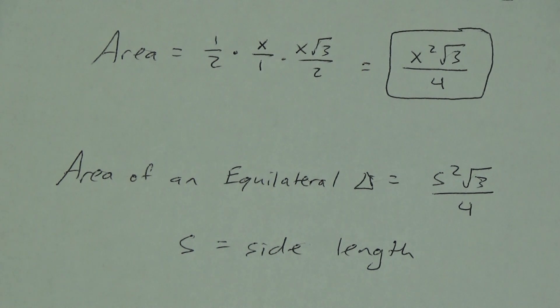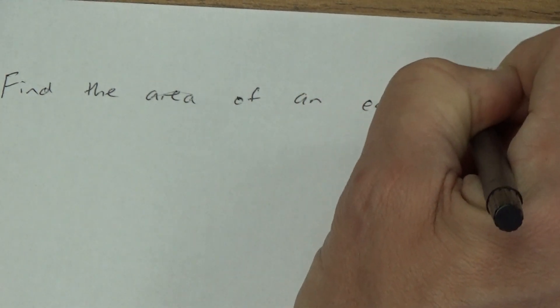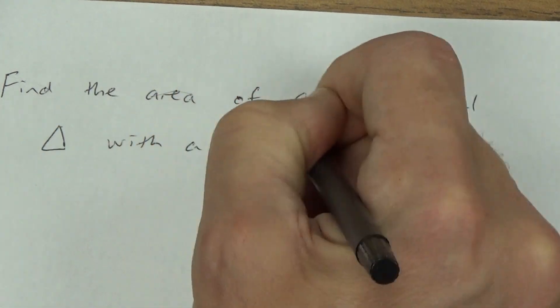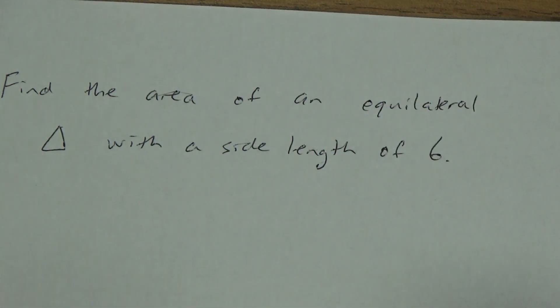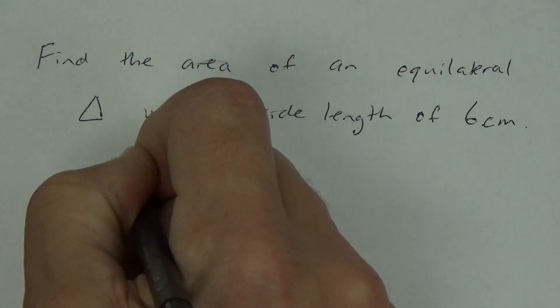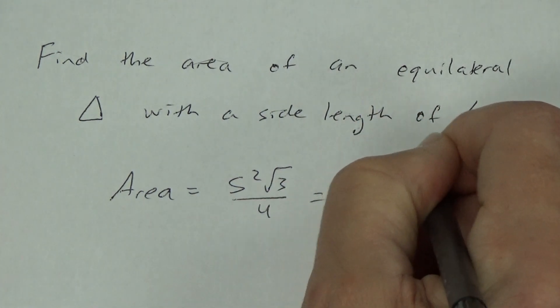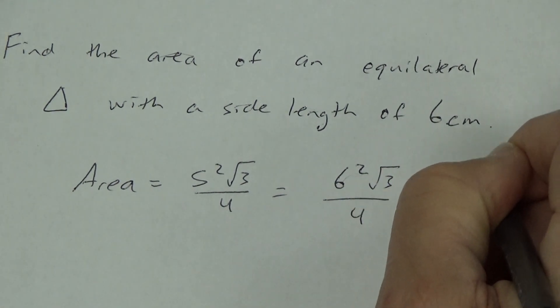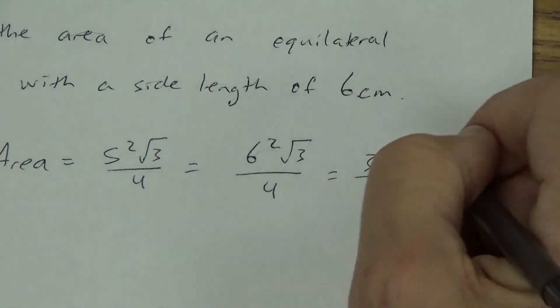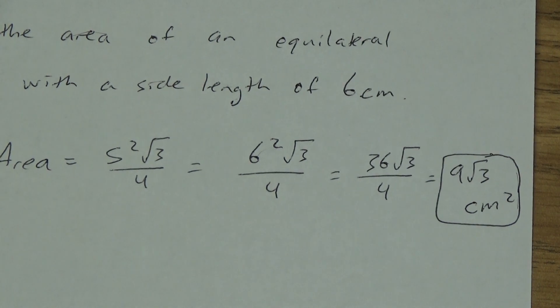Now let's do an example. Find the area of an equilateral triangle with a side length of 6 centimeters. We go straight to our formula: area = S²√3/4. S is 6, so we get 6²√3/4, which is 36√3/4. Reducing 36 and 4 — both divisible by 4 — gives us 9√3. Label it centimeters squared. That's it — these go really, really quickly.